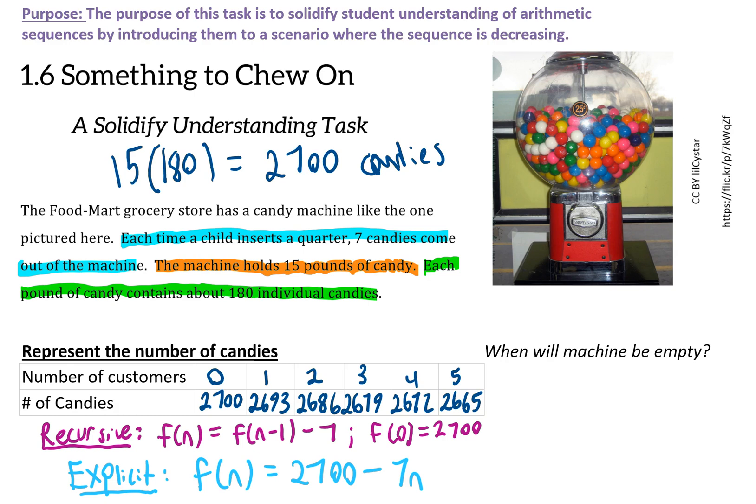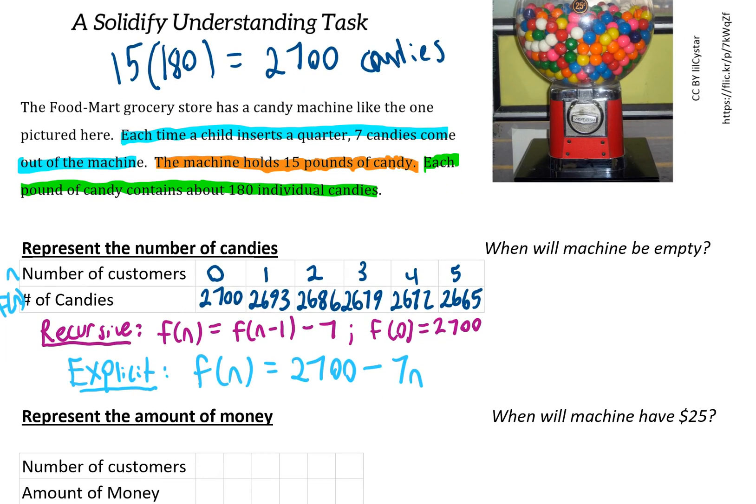I can use that to answer when the machine will be empty. f(n) represents the number of candies, and n represents the number of customers. To find when the machine is empty, I plug in zero for f(n).